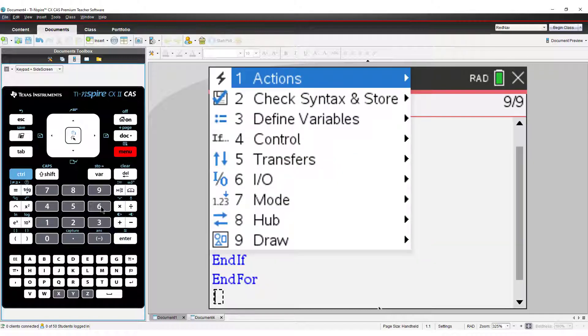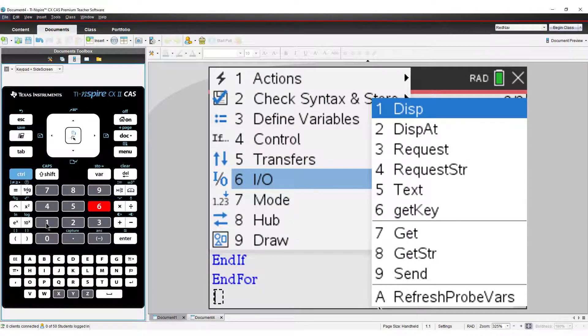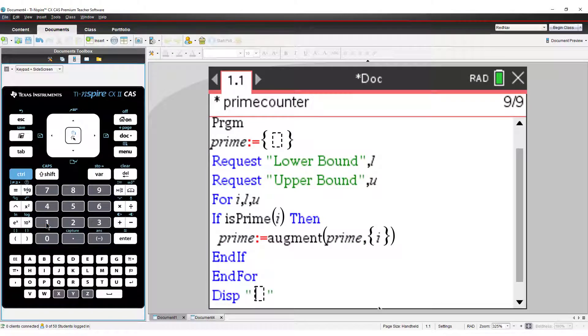When my loop is finished, I might want to identify how many primes were found. To do this I will simply display the dimensions of my prime list. The dim command returns that dimension.